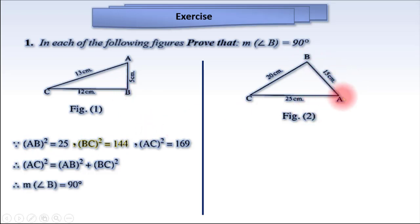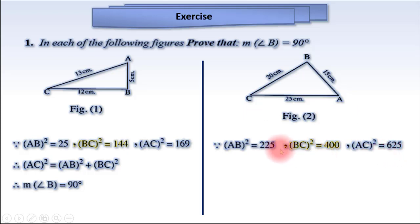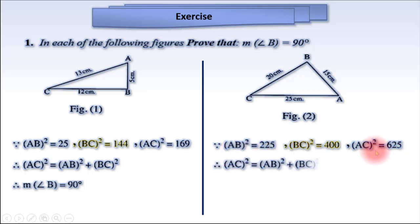Here AB power 2 equals 15 power 2 equals 225. BC power 2 equals 20 power 2 equals 400, and AC power 2 equals 25 power 2 equals 625. Since 400 plus 225 equals 625, and AB power 2 plus BC power 2 equals AC power 2, therefore the measure of angle B must equal 90 degrees.